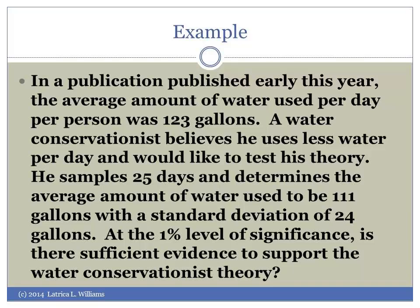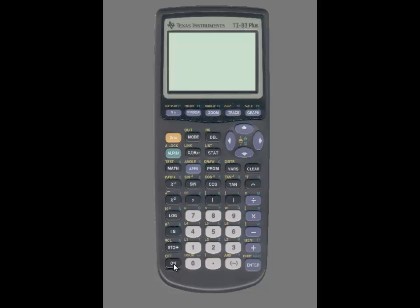At the 1% level of significance, is there sufficient evidence to support the water conservationist theory? To use the calculator to compute the test statistic as well as the p-value...